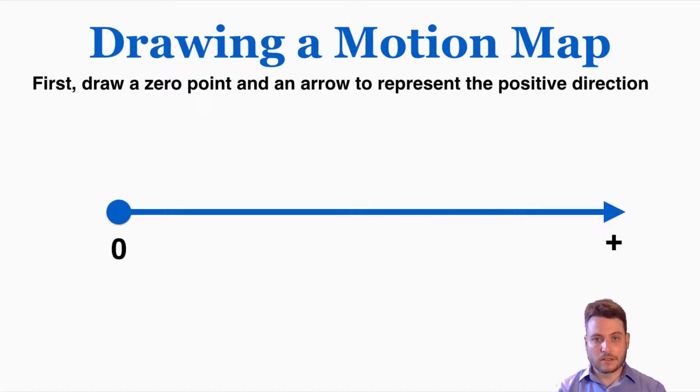What a motion map does is it puts dots at the position that an object is at after different amounts of time has passed. Usually there's one dot for every second of time. So for example, if we had a car starting at the zero point here and the car started to move, I would put a point where the car is for every second that the car had traveled. I'm going to put a point where it starts and then as it moves forward, I'm going to add a point for every second that it's traveled.